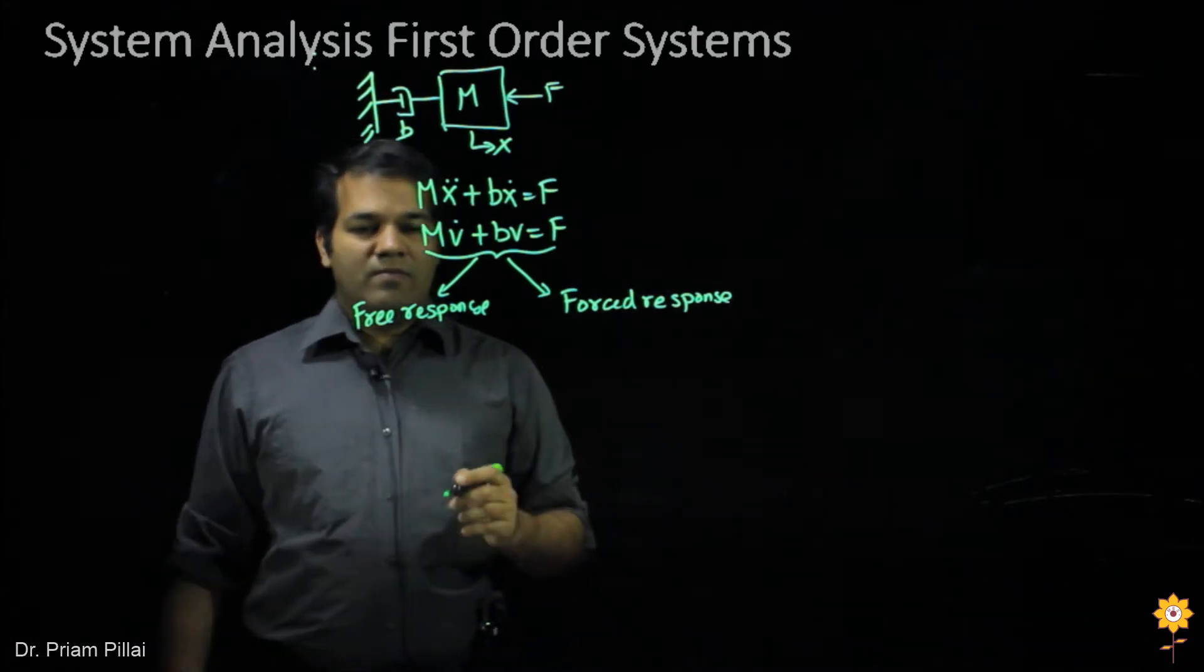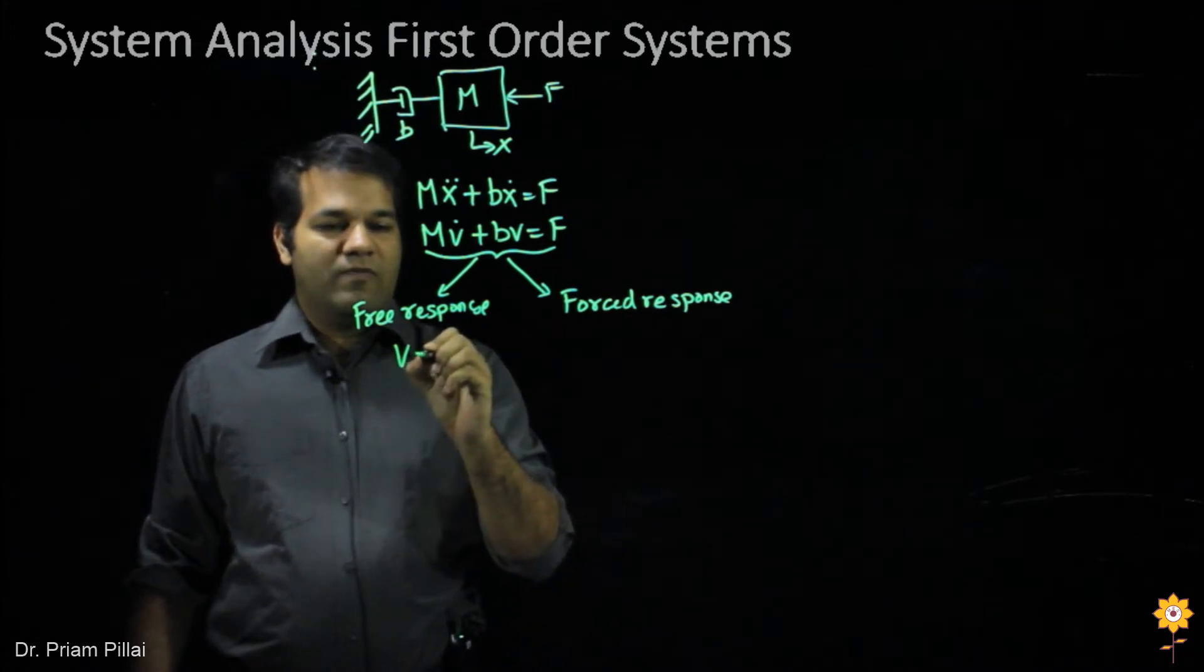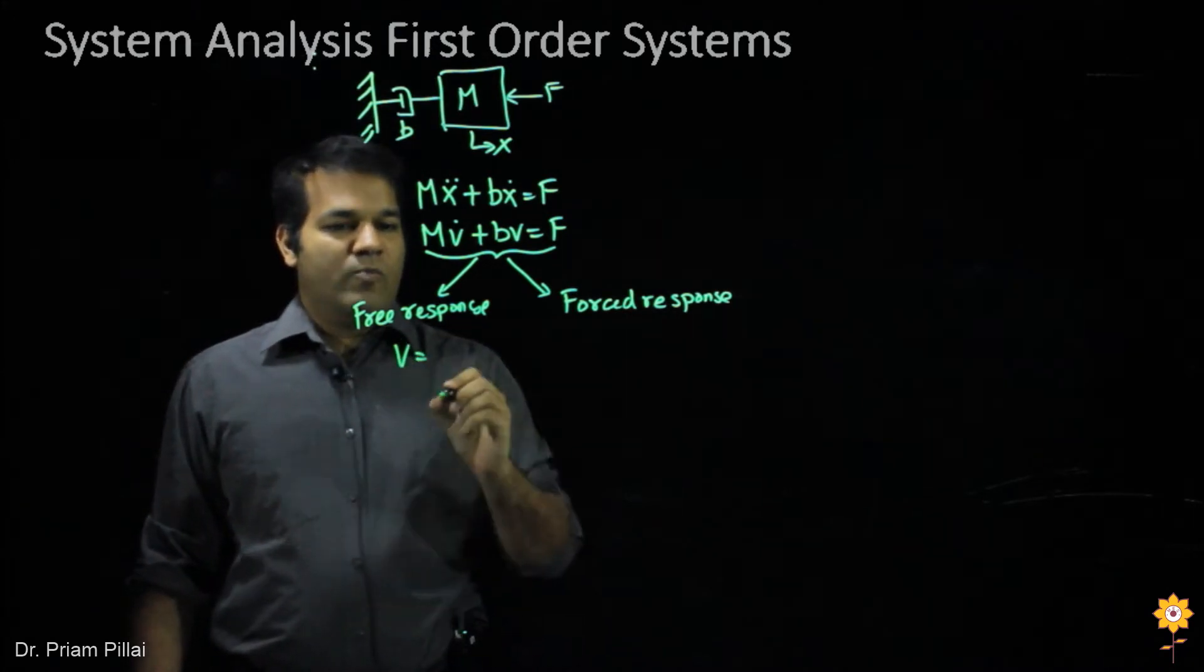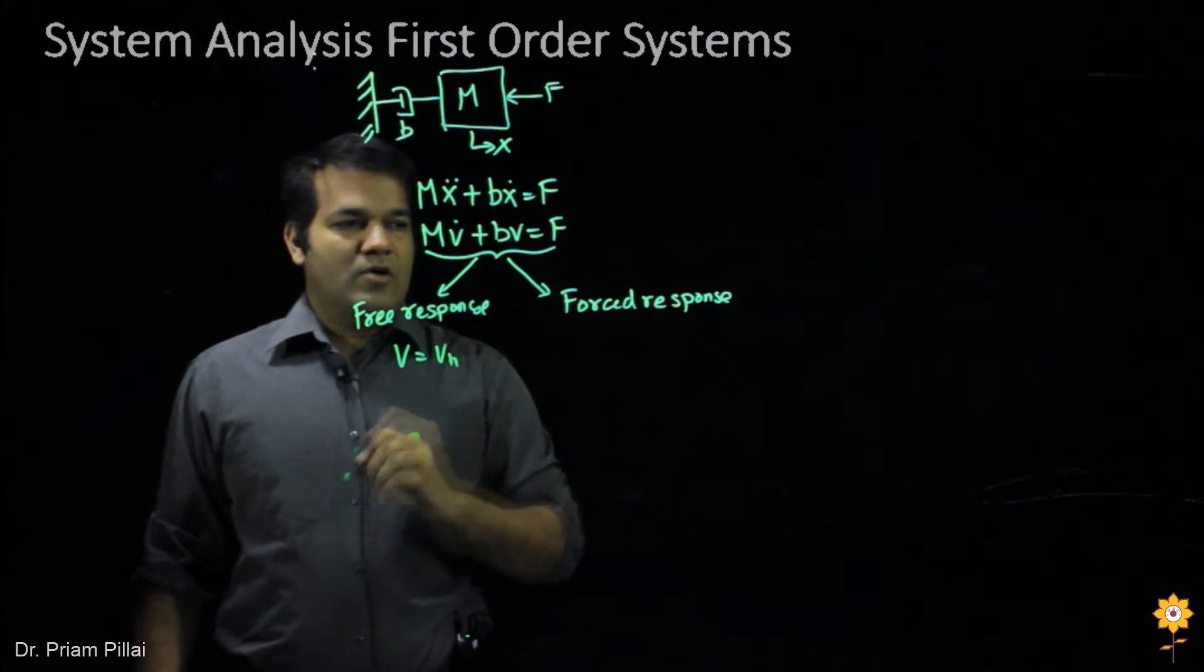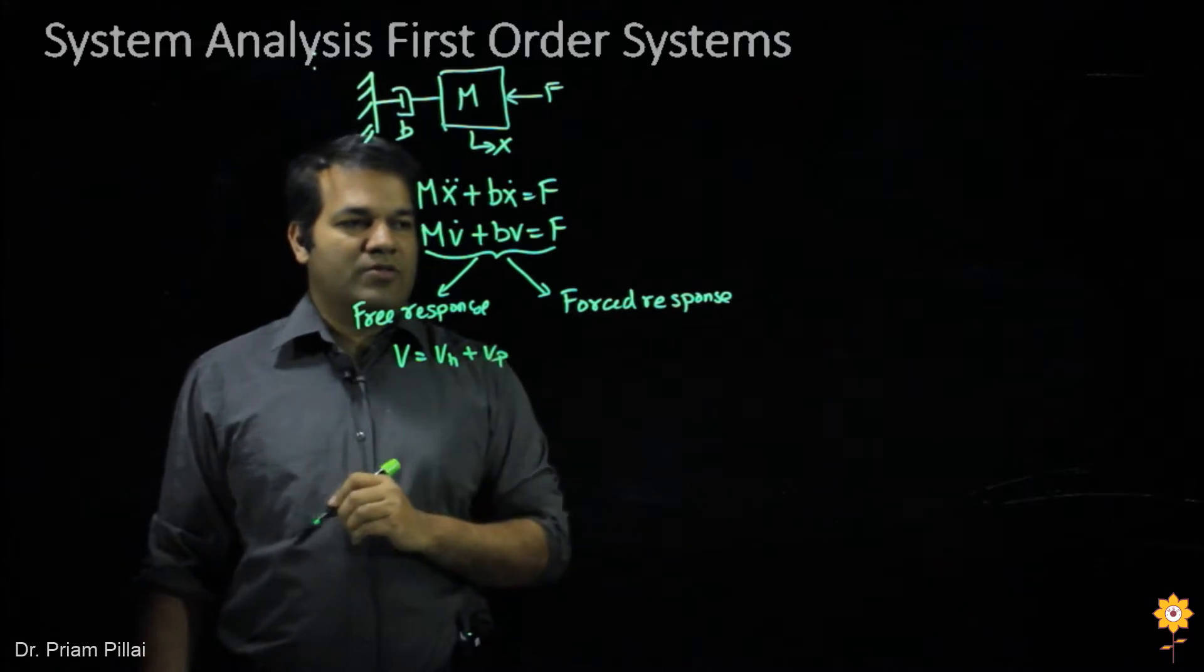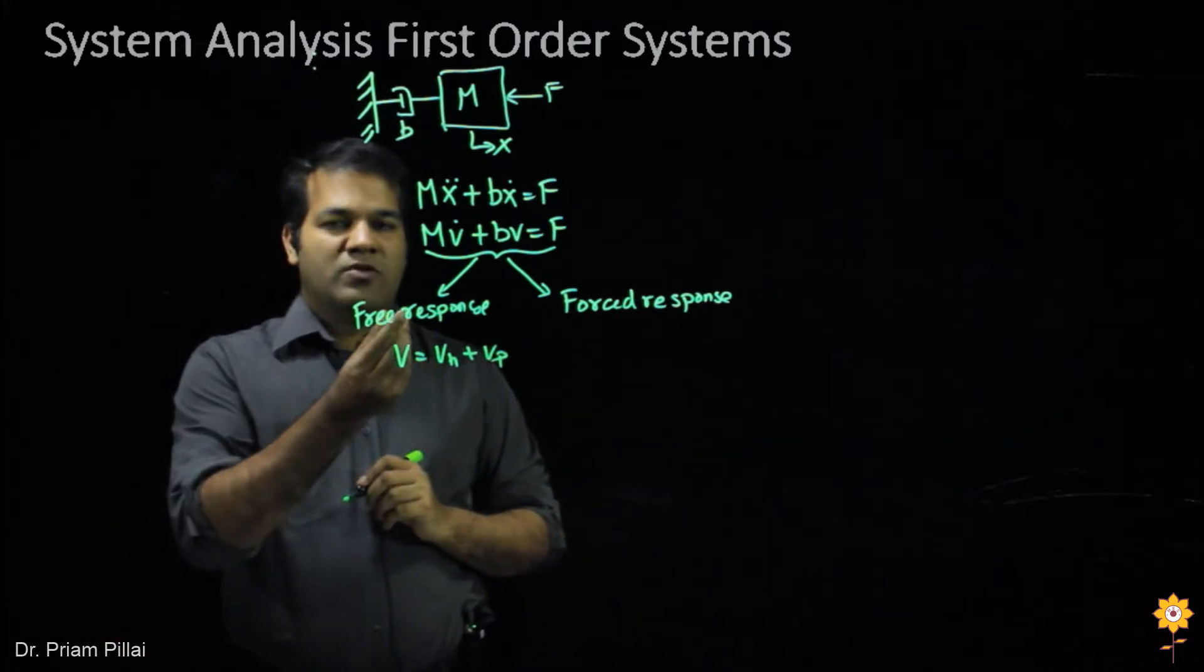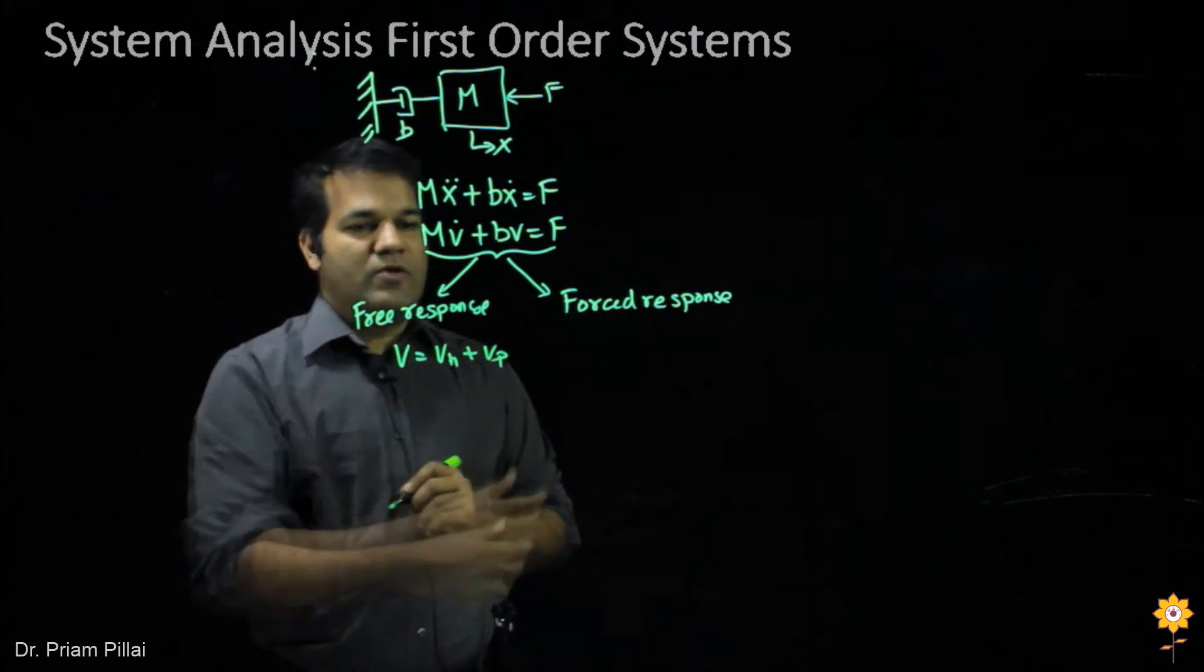Since this is a linear system, the total solution to this problem, the velocity V, would be the sum of the homogeneous solution plus what we call a particular solution. The homogeneous corresponds to the free response and the particular corresponds to the forced response.